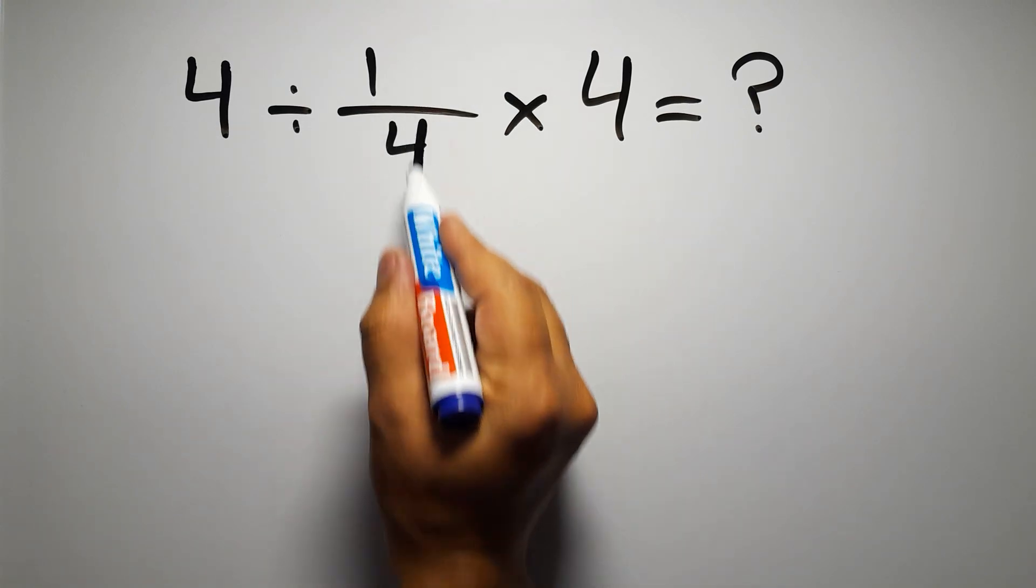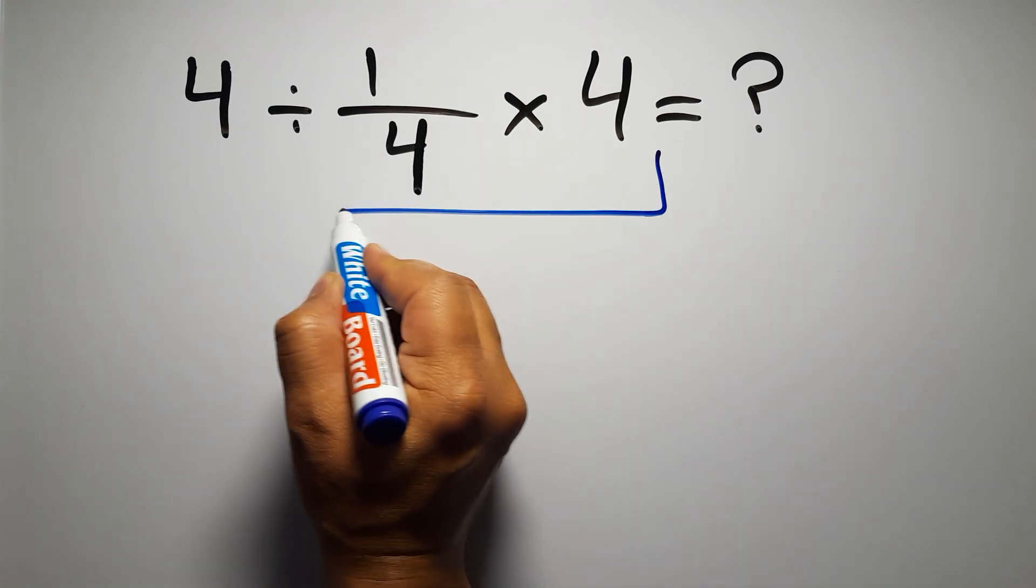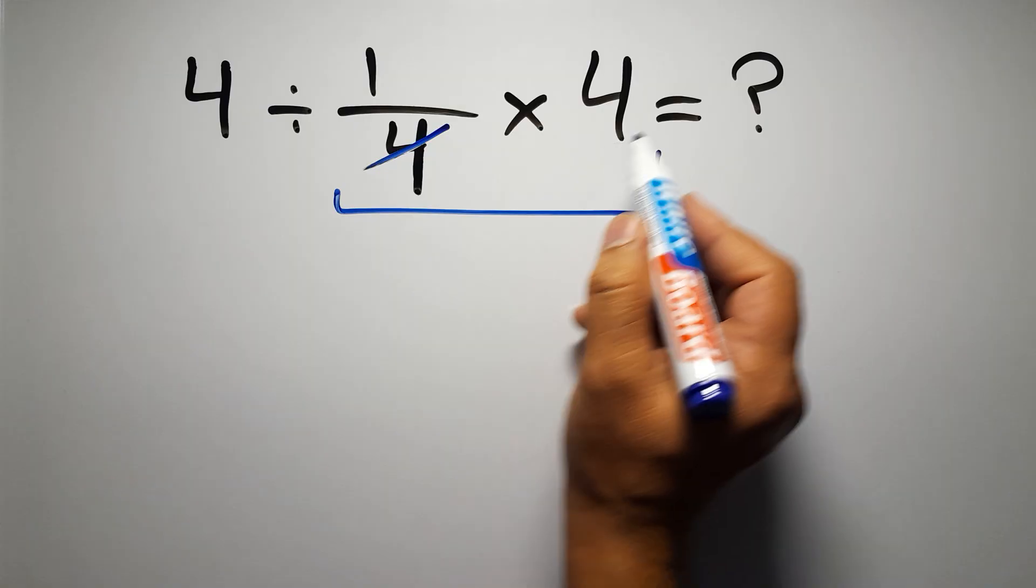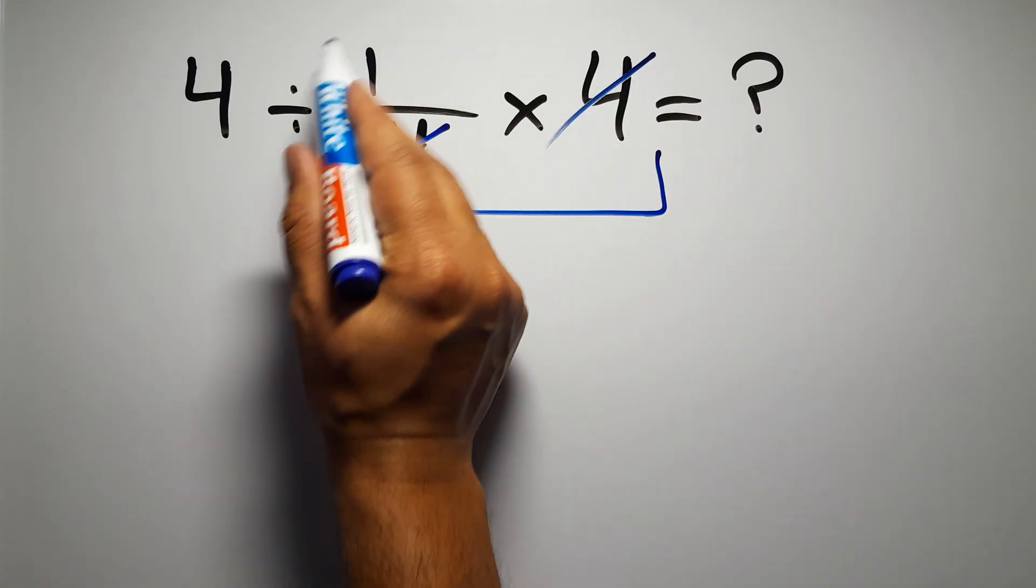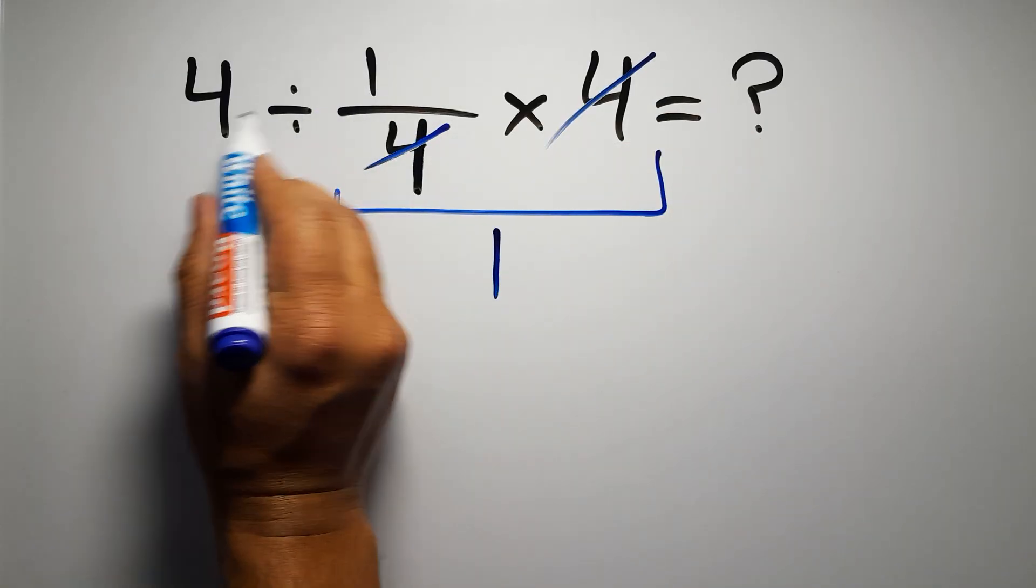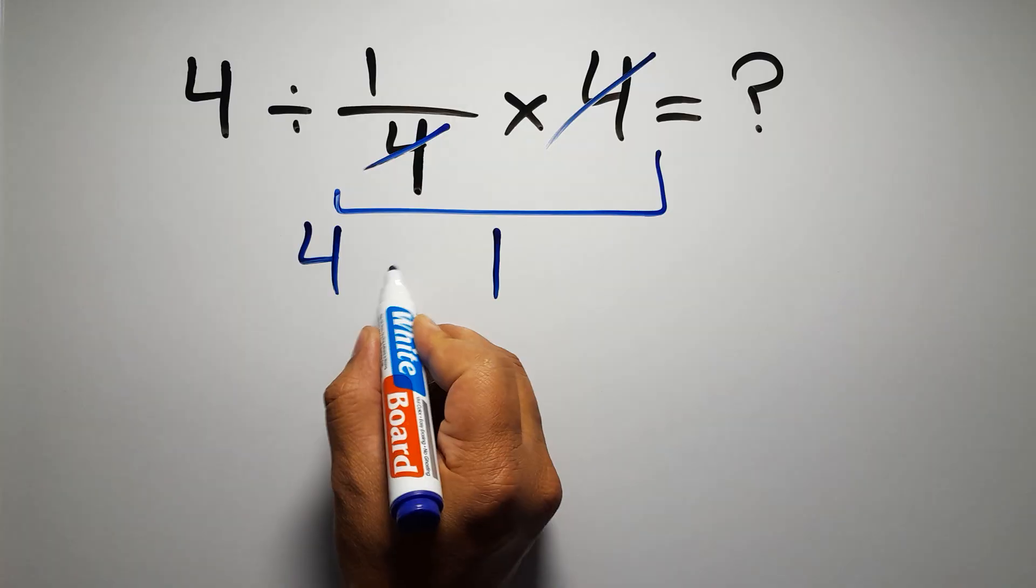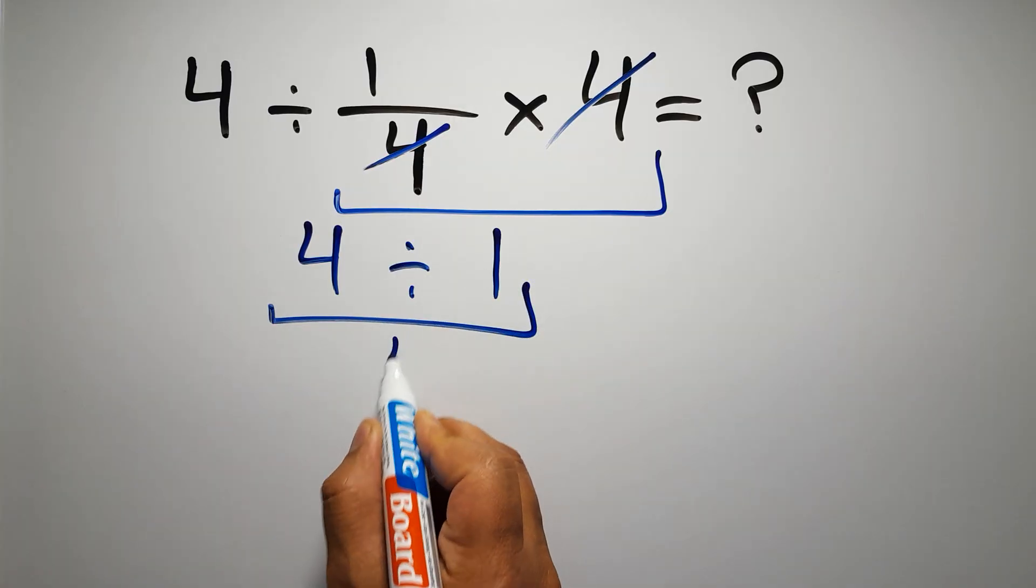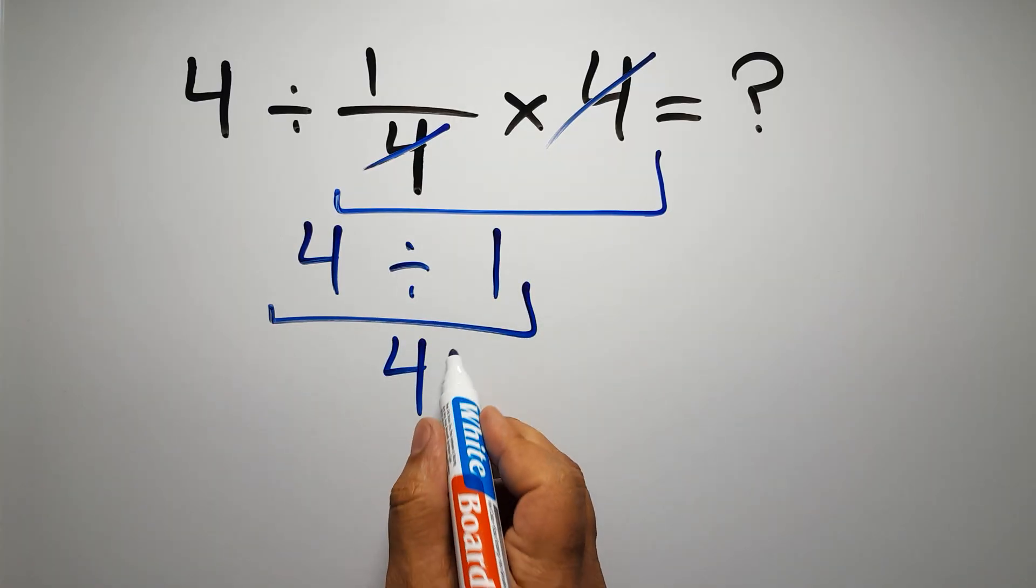First we do this multiplication, 1 over 4 times 4. We can easily cancel this 4 and this 4, so here we have just 1, and the 4 divided by 1 gives us 4. But this answer is not correct.